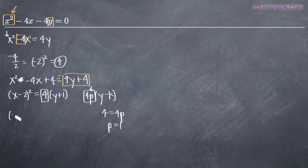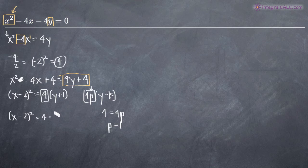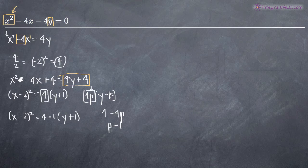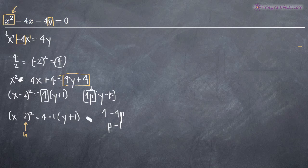So we write the equation as x minus 2 squared equals 4 times 1 times the quantity y plus 1. We do this so we can easily identify our variables. From the standard formula, this means h corresponds to 2, k corresponds to negative 1, and p corresponds to 1.